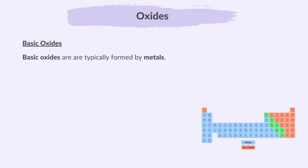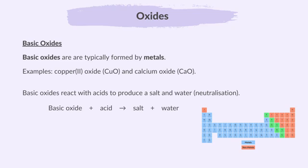On the other hand, basic oxides are typically formed by metals. Examples include copper(II) oxide and calcium oxide. Basic oxides react with acids to produce a salt and water — that is, neutralization. For example, calcium oxide, which is a basic oxide, and hydrochloric acid gives calcium chloride, which is a salt, and water.